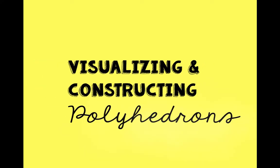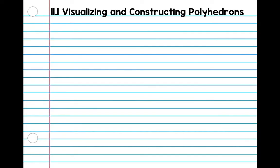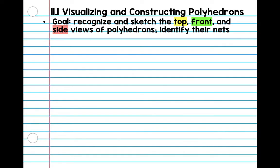Hey guys, so today we are starting chapter 11 and we're going to be learning about visualizing and constructing polyhedrons. Make sure you have a notebook and your pencil. Go ahead and write your title. Our goal today is to recognize and sketch the top, front, and side views of polyhedrons, then we're going to identify their nets.